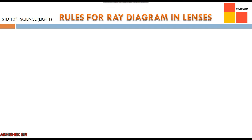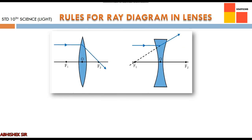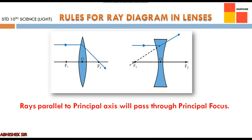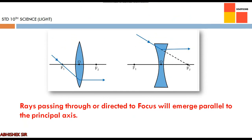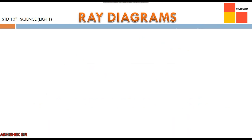Next topic is ray diagrams. We can represent image formation by lenses using ray diagrams. For drawing ray diagrams, just like spherical mirrors, we consider any two light rays and see how they are refracted. We follow three rules: first, rays parallel to the principal axis will pass through the principal focus for convex lens, or appear to come from the principal focus for concave lens. Second, rays passing through the optical center emerge without deviation. Third, rays passing through or directed to the focus will emerge parallel to the principal axis.